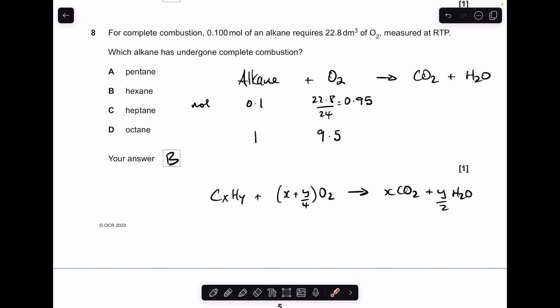So the other way to do it is to use this generic formula, this algebraic formula for the complete combustion of any alkane. All we need to do is sub in the x and y values for the alkanes and then work out the oxygen value using this x plus y over four. So starting with pentane, x is 5, y is 12, so when you put it in there you get 8, so we already know that's not the right answer. C6H14, so 6 plus 14 over 4 gives 9.5. There's the answer.